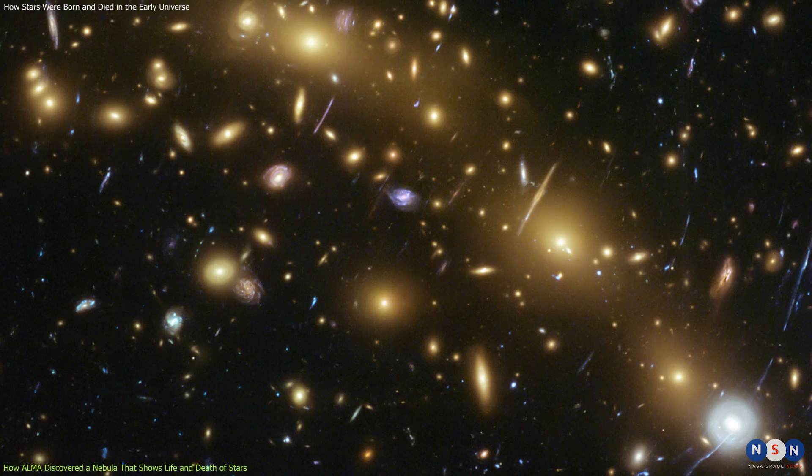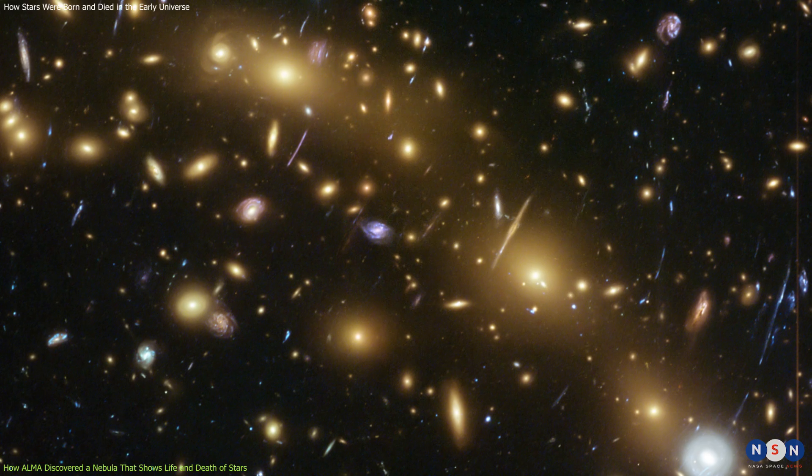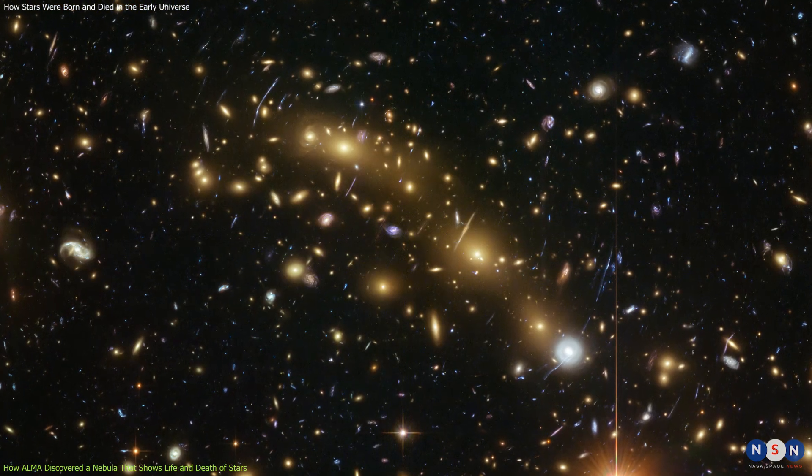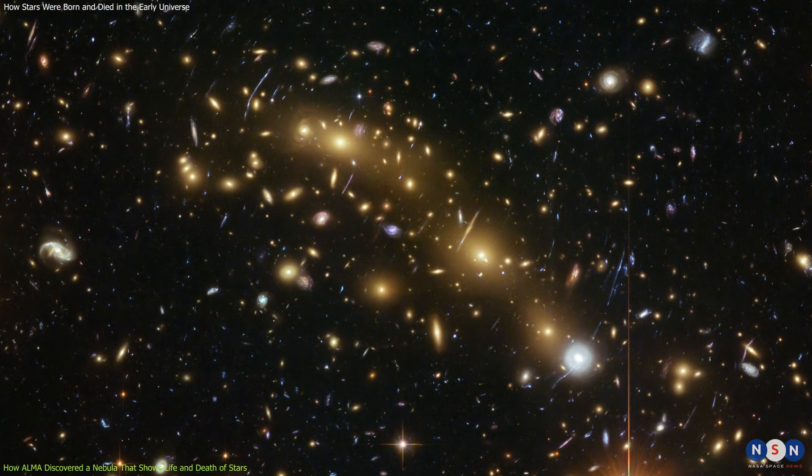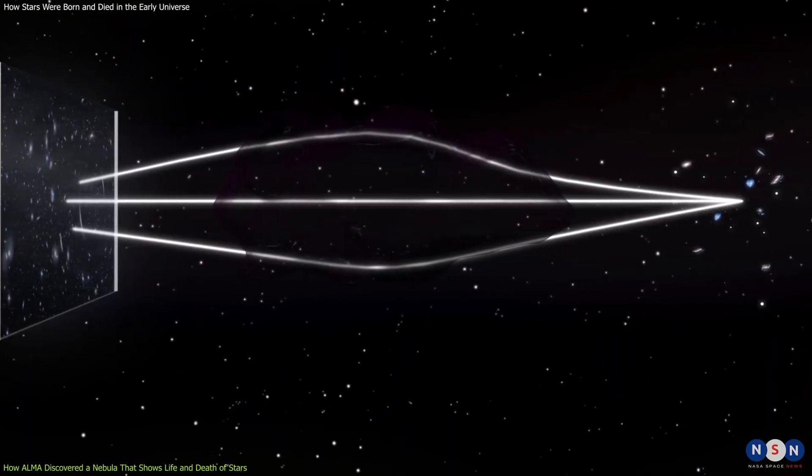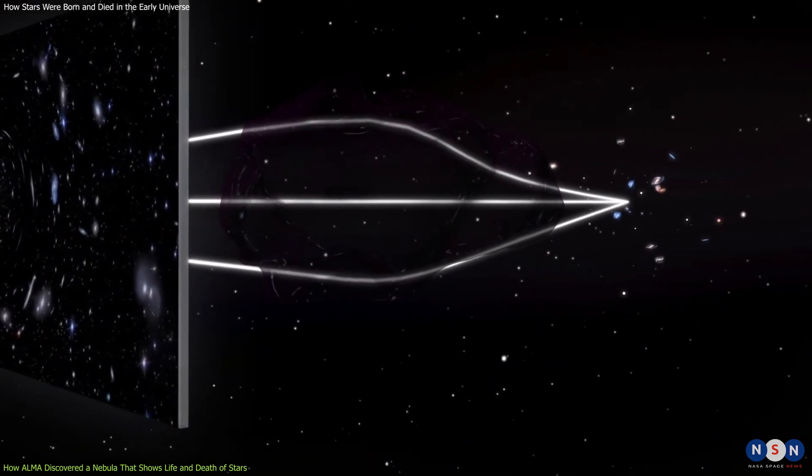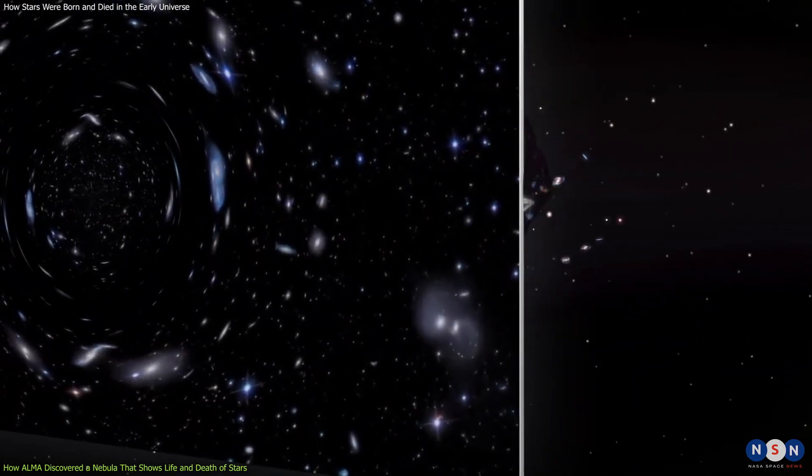Hubble saw this galaxy as a tiny red dot in the sky, which indicated that it was very far away and very old. Hubble also saw that this galaxy was part of a cluster of galaxies that acted as a gravitational lens, which is a phenomenon where a massive object bends the light from a more distant object behind it, magnifying and distorting its image.